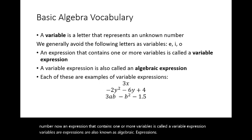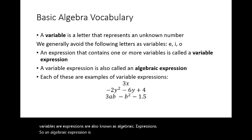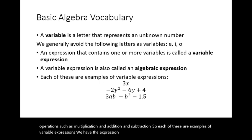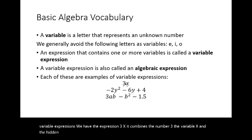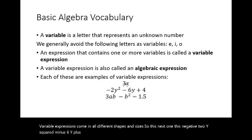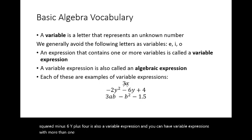An algebraic expression is any expression that contains variables, numbers, and arithmetic operations such as multiplication, addition, and subtraction. Each of these are examples of variable expressions. We have the expression 3x — it combines the number 3, the variable x, and the hidden multiplication between the two. Variable expressions come in all different shapes and sizes. For example, negative 2y² minus 6y plus 4 is also a variable expression. You can also have variable expressions with more than one variable, such as 3ab minus b² minus 1.5.